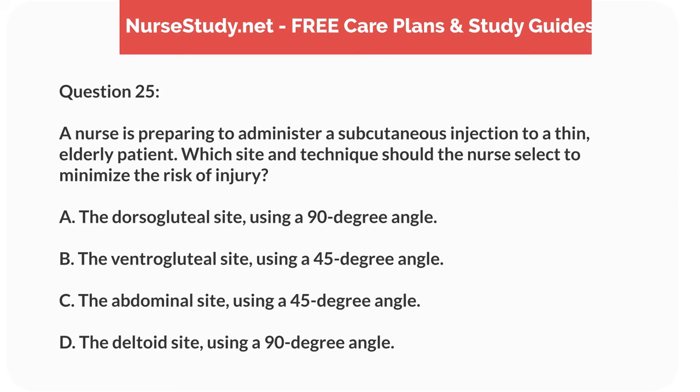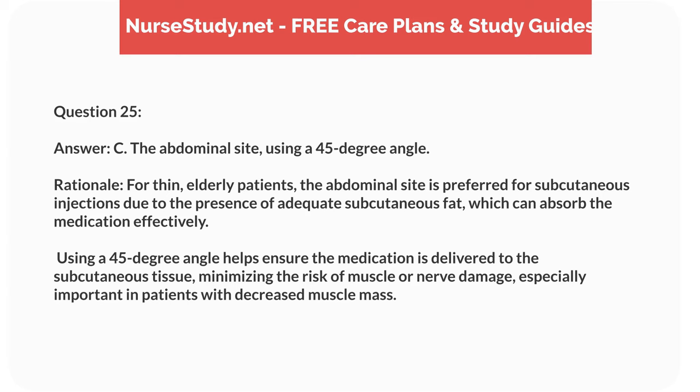Question 25. A nurse is preparing to administer a subcutaneous injection to a thin, elderly patient. Which site and technique should the nurse select to minimize the risk of injury? A. The dorsogluteal site, using a 90-degree angle. B. The ventrogluteal site, using a 45-degree angle. C. The abdominal site, using a 45-degree angle. D. The deltoid site, using a 90-degree angle. Answer: C. The abdominal site, using a 45-degree angle. Rationale: For thin, elderly patients, the abdominal site is preferred for subcutaneous injections due to the presence of adequate subcutaneous fat, which can absorb the medication effectively. Using a 45-degree angle helps ensure the medication is delivered to the subcutaneous tissue, minimizing the risk of muscle or nerve damage, especially important in patients with decreased muscle mass. Visit nursestudy.net for more nursing practice exams, care plans, and study guides.